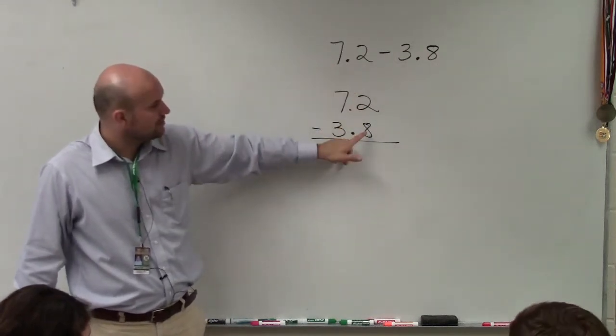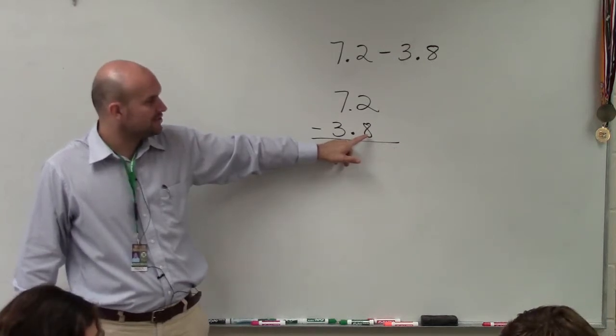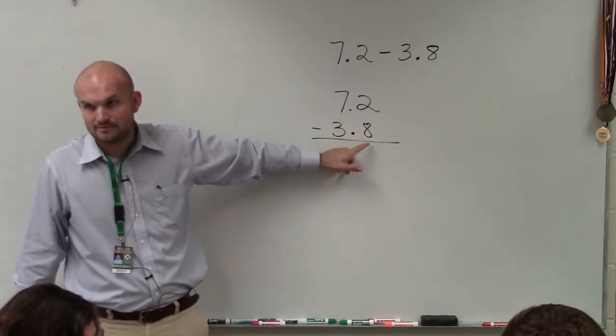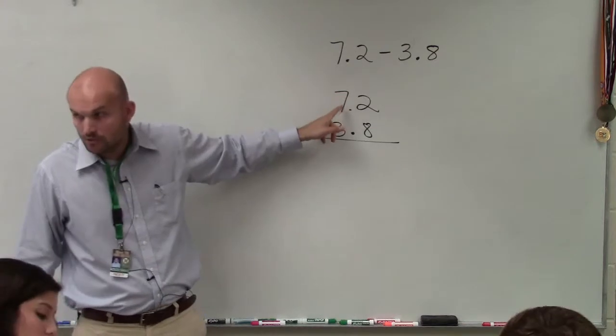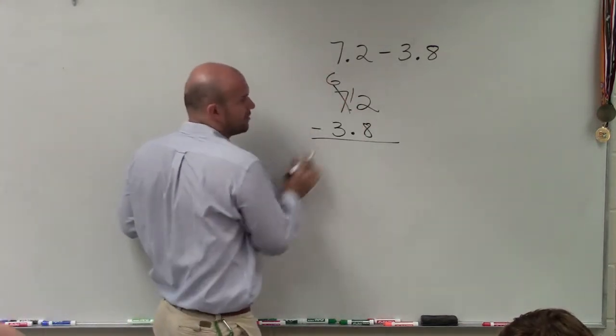However, from the 2, I cannot subtract 8, right? So therefore, I need to borrow from the next digit over, which makes that a 6, and then that will be a 12.